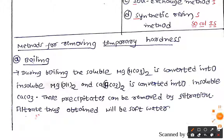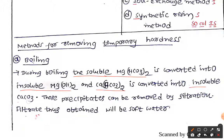The first method is boiling. During boiling, soluble magnesium bicarbonate is converted into insoluble magnesium hydroxide, and calcium bicarbonate is converted into insoluble calcium carbonate. Since they are insoluble, you can separate them easily.